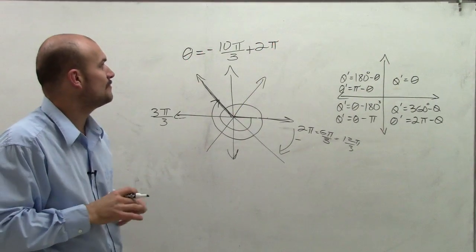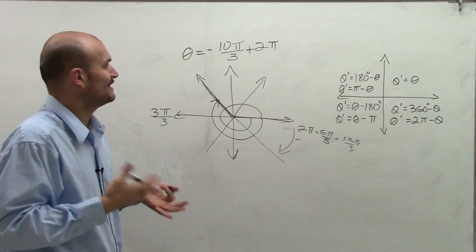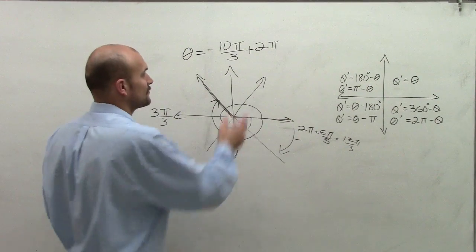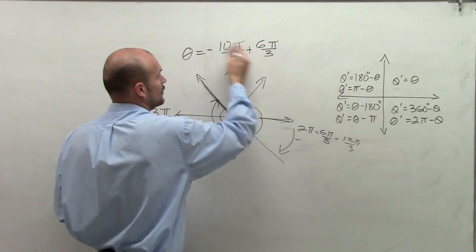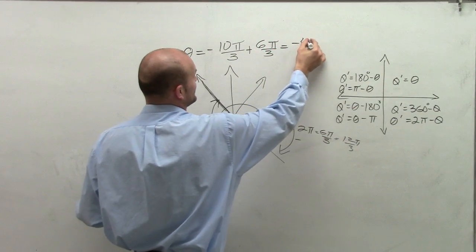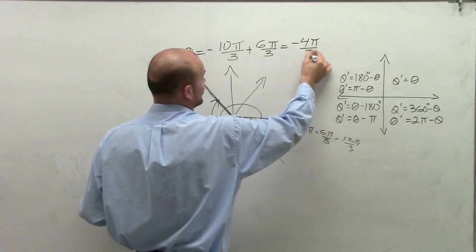Now, by adding negative 10 pi over 3 plus 2 pi, I've got to get the same denominator of 3, right? So I'm going to rewrite 2 pi as 6 pi over 3. When doing that, I end up with negative 4 pi over 3.